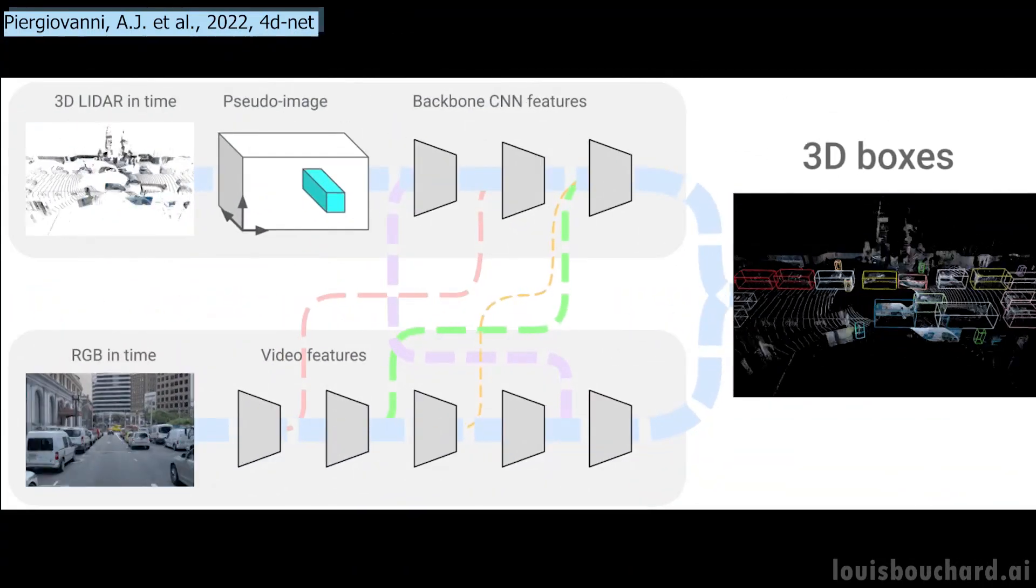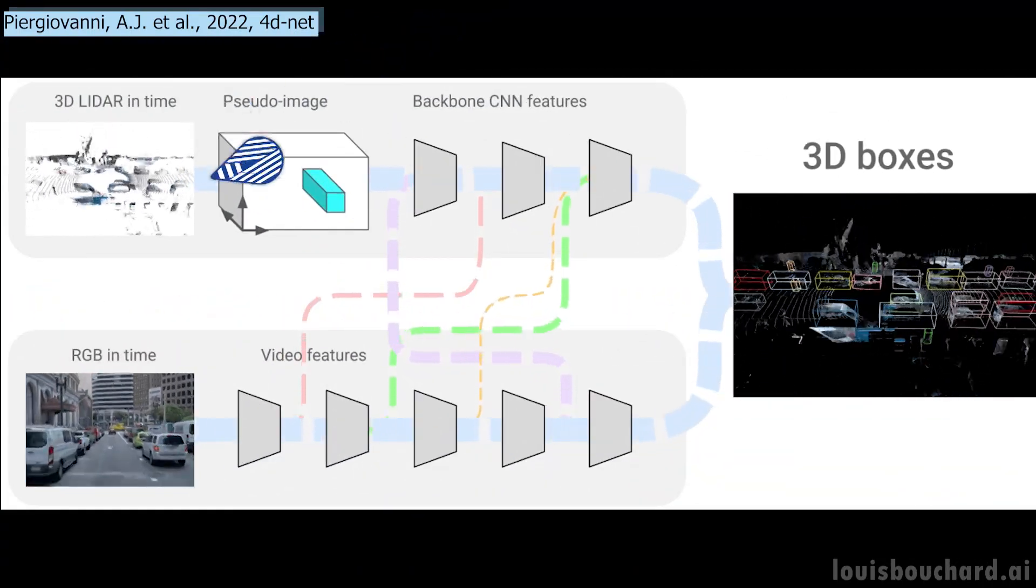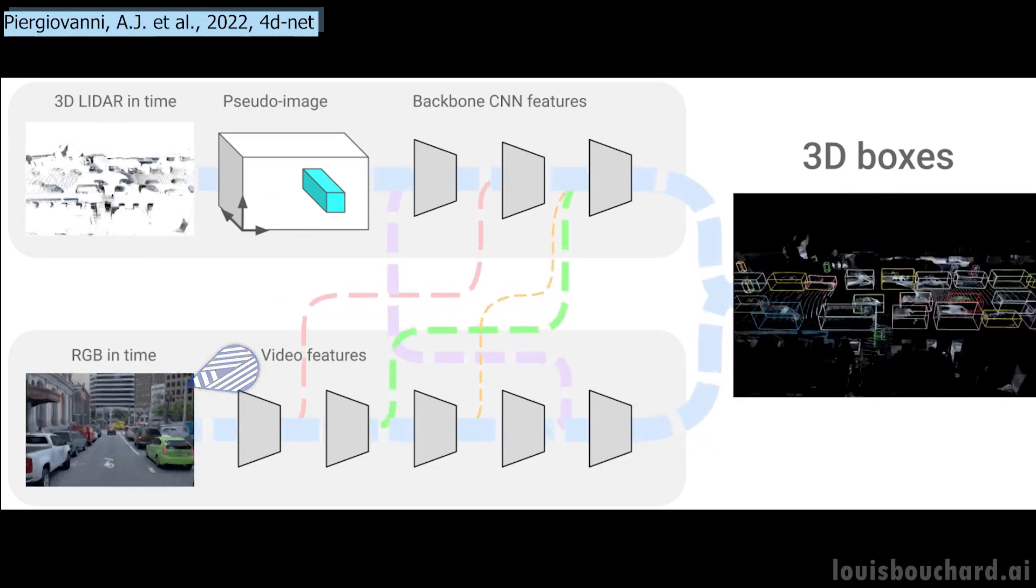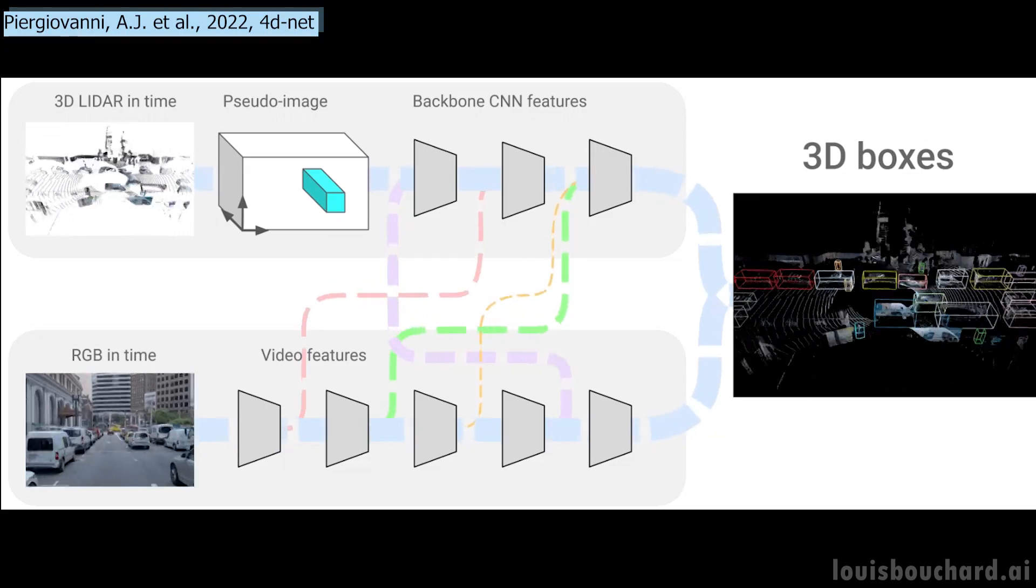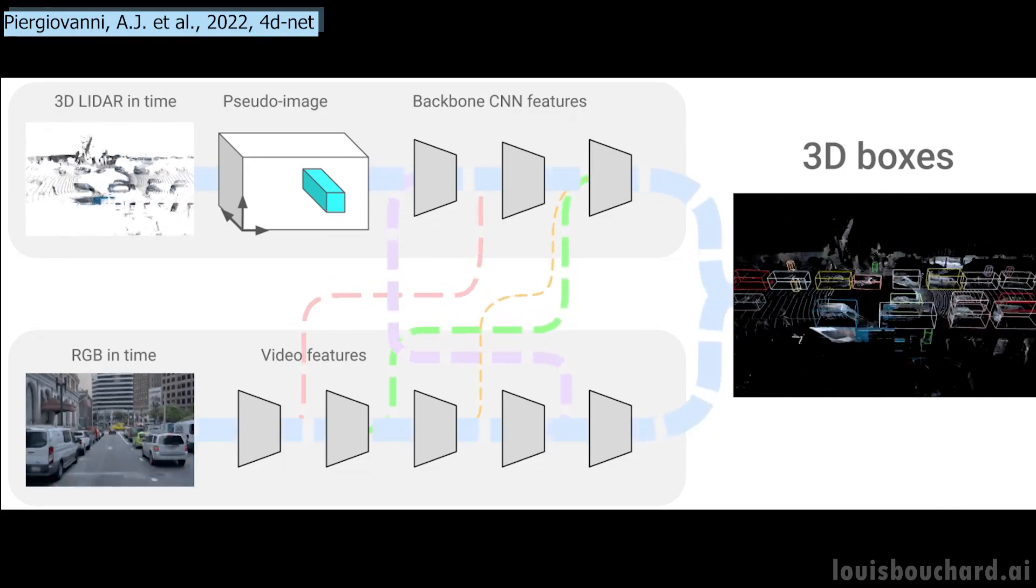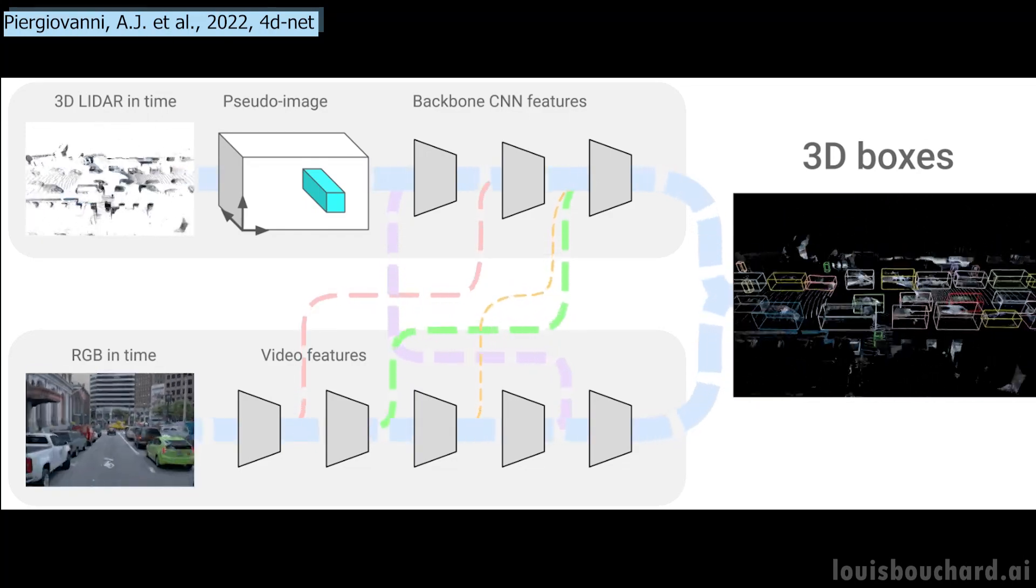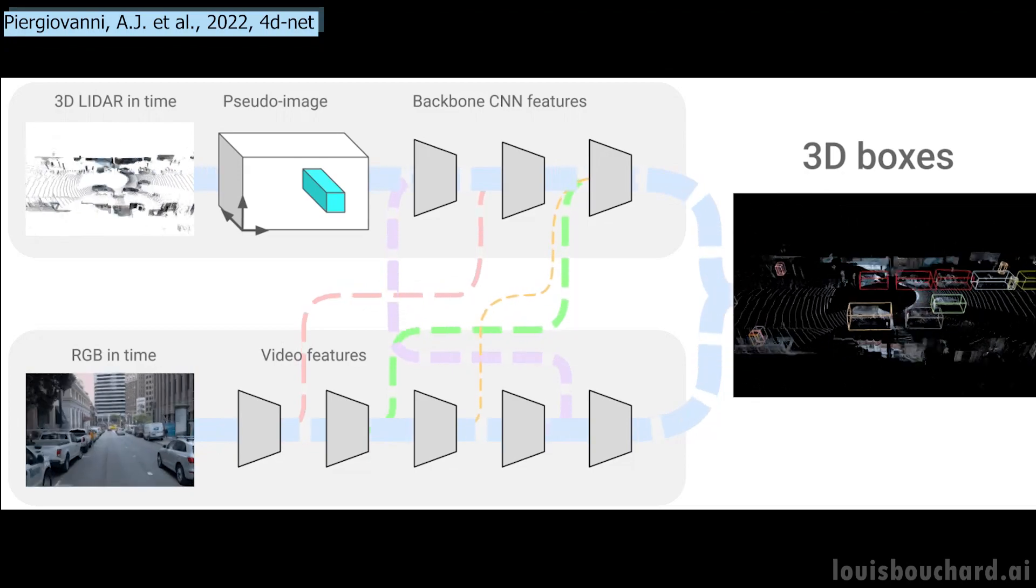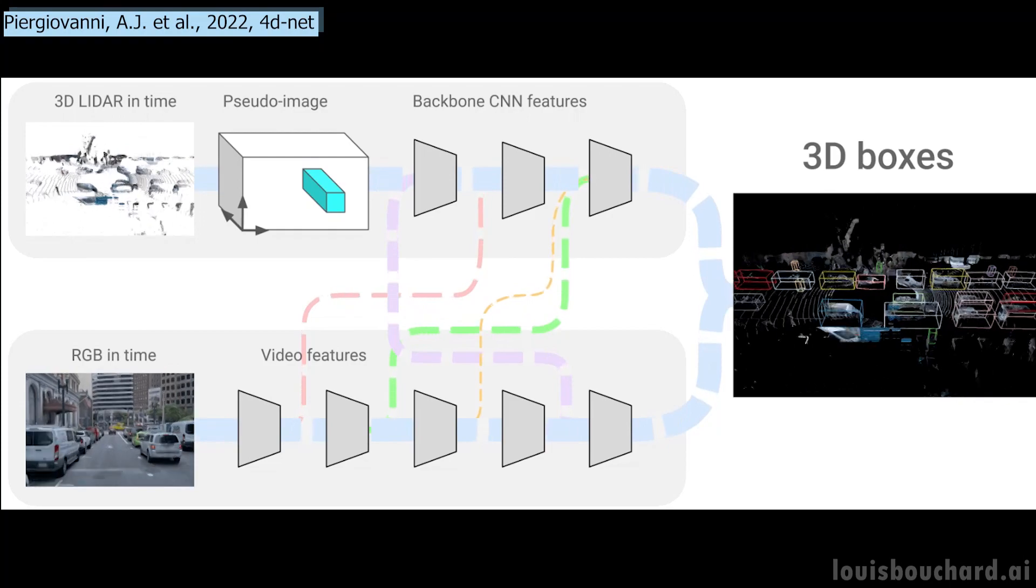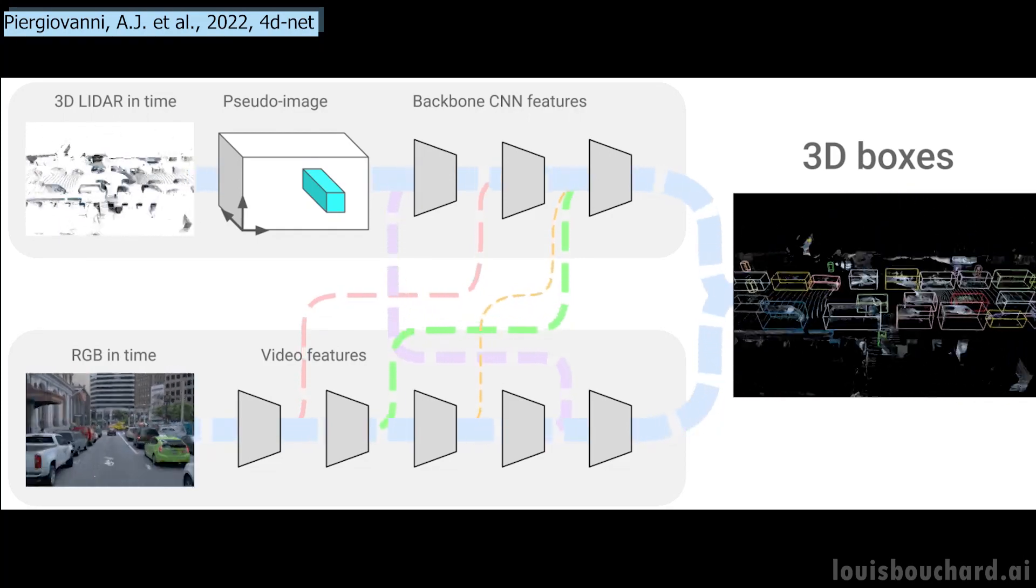They produce this view using LiDAR data called point clouds in time or PCIT and regular cameras or here called RGB videos. These are both 4-dimensional inputs, just like we humans see and understand the world. The 4 dimensions come from the video being taken in time. So the vehicle has access to past frames to help understand context and objects to guess future behaviors, just like we do, creating the 4th dimension. The 3 others are the 3D space we are familiar with.